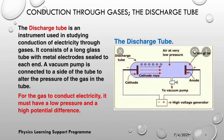Conduction through gases — the discharge tube. The instrument that is used in studying conduction through gases is a discharge tube. If you have looked at the video on conduction through liquids, you'll remember that the instrument used to study conduction through liquids is what we call the voltameter. For conduction through gases, we use the discharge tube.